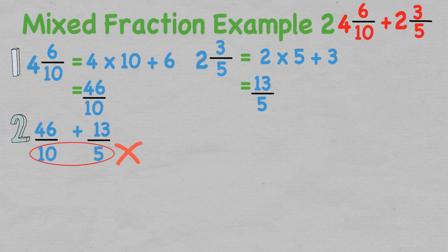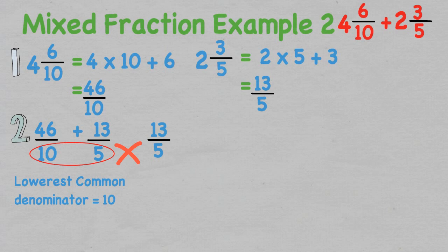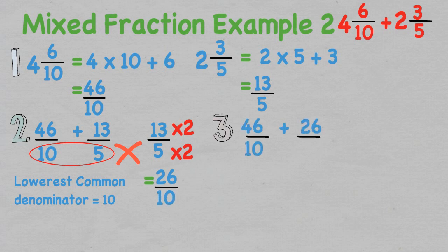So we now have 46 over ten plus 13 over five. The fractions aren't alike, so we need to find the lowest common denominator — in this case it is ten, as both denominators can go into ten. To get 13 over five to over ten, we multiply the denominator by two, and whatever we do to the denominator we must do to the numerator. This equals 26 over ten.